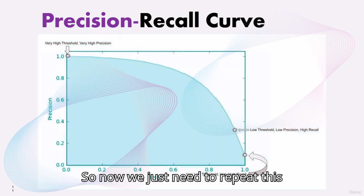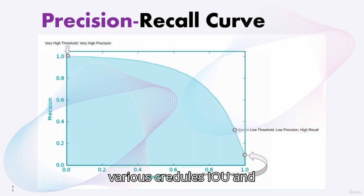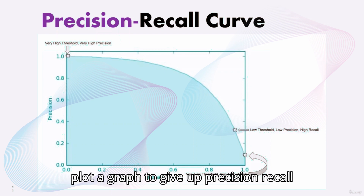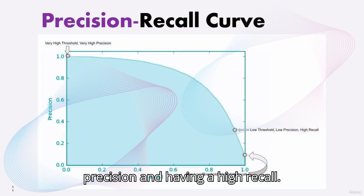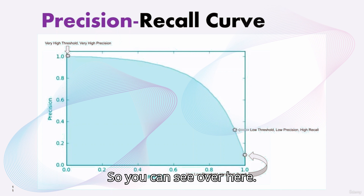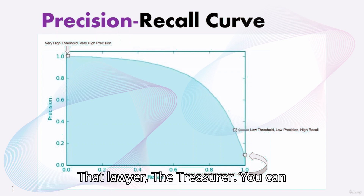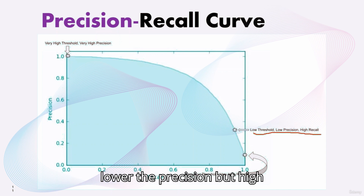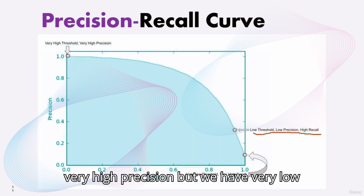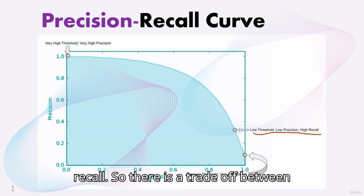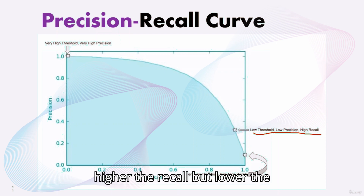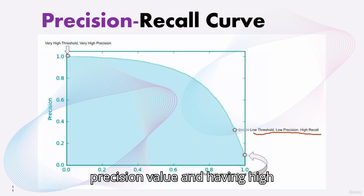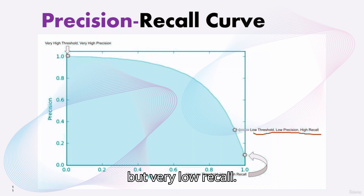We repeat this precision-recall calculation for various IOU thresholds and plot a graph to get the precision-recall curve. We can then compare the trade-off between high precision and high recall. The lower the threshold, the lower the precision but the higher the recall. And when we have a very high threshold, we have very high precision but very low recall. So there is a trade-off: a lower threshold gives higher recall but lower precision, while a higher threshold gives very high precision but very low recall.